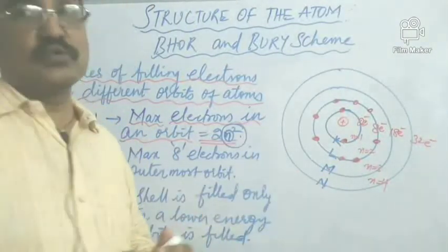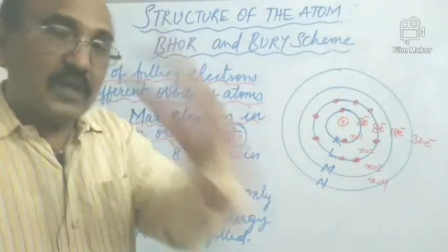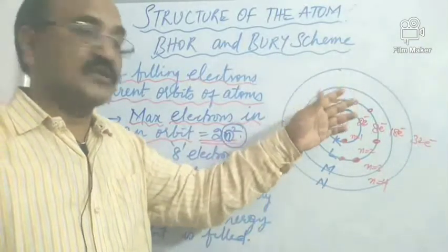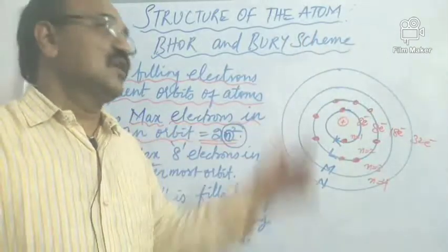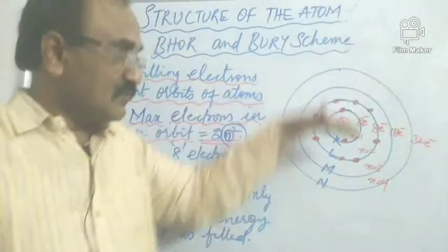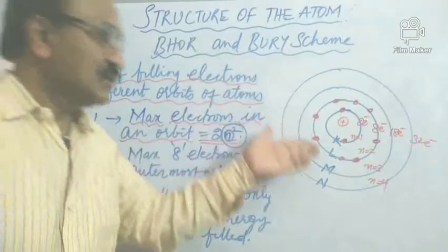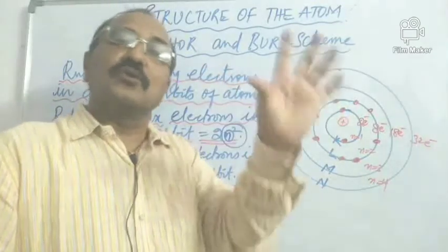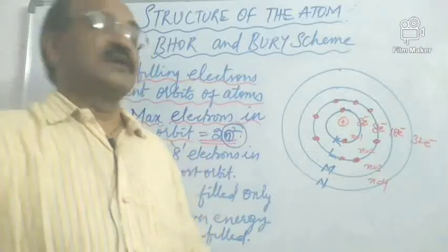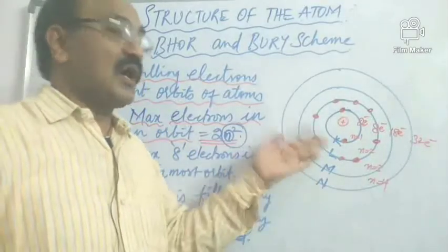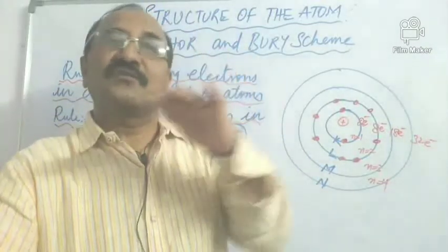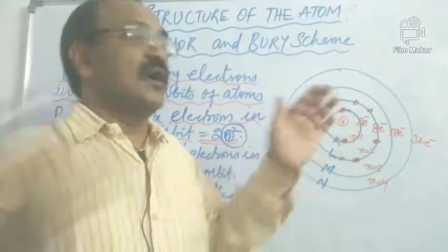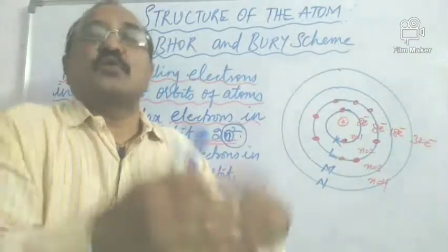What is the second rule? The second rule states that only 8 electrons are allowed to fill the shell which is outermost. After filling 8 electrons in the outermost shell, they will go to the next shell. The second rule tells us that a maximum of 8 electrons only are allowed to go into a given outermost shell or orbit. How are we filling the electrons? Gradually from the innermost shell outward — this is called the Aufbau principle.